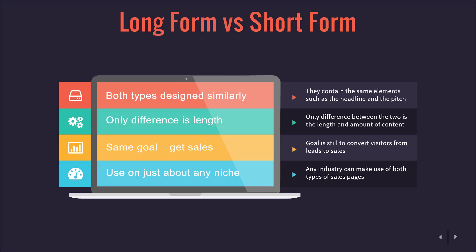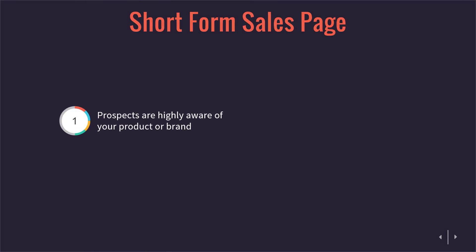Both have pretty much the same goal — to get sales — and you can use them in just about any niche. Here are some big differences to remember. A short form sales page is great if your prospects are already highly aware of your product or brand, if you're a big brand, or if you have a very popular product or a list that is very much into your brand, sometimes all you need is a short form sales page.